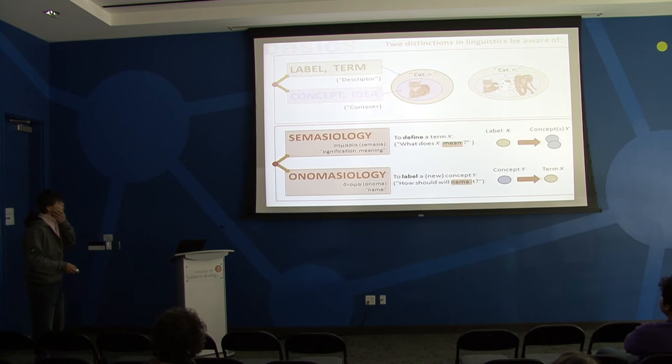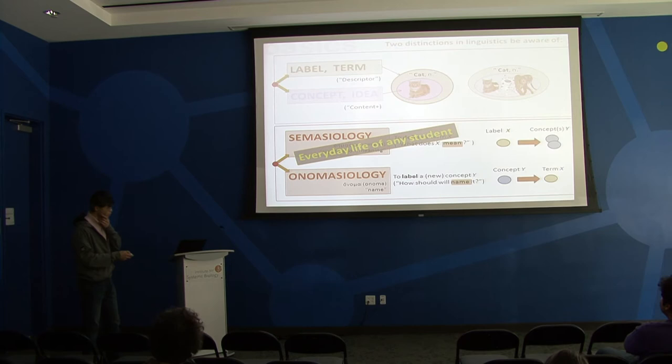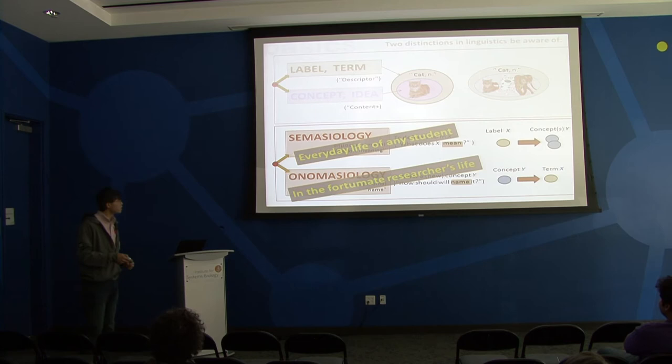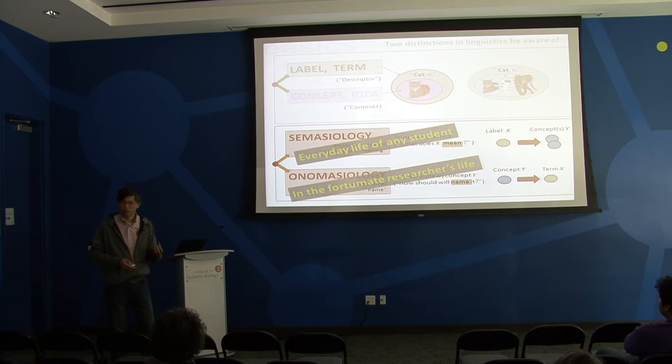One reason proposals and papers are rejected is because people don't understand, and nothing is more annoying for a reviewer than not understanding something - you never accept something you don't understand. It's worse if you use the same term but the reviewer has a different notion of it and interprets it differently. So it's important to be aware of that. Now coming back to semasiology and onomasiology: defining something is the common problem - we always ask for definitions. But specific to scientists is onomasiology, because you find something new, you discover something, and you have to name it very carefully.